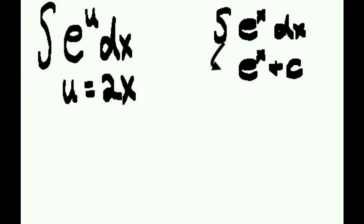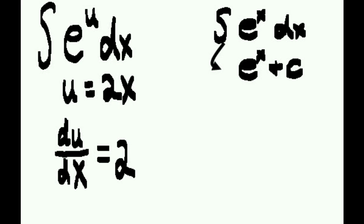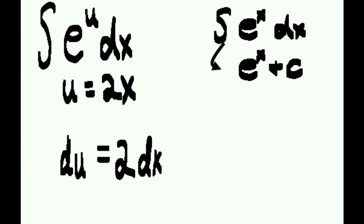We'll take the derivative of 2x. Now we have a u on the left and an x on the right, so we write du/dx. We move it over a bit, and the derivative of 2x is 2. Let's multiply both sides by dx. Let's multiply both sides by dx, and the dx on the left cancels, giving us du equals 2dx.